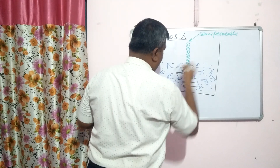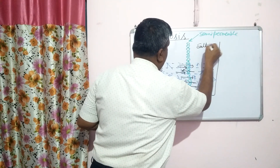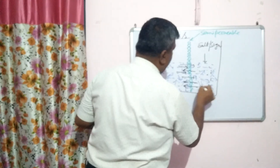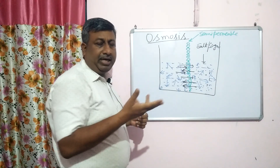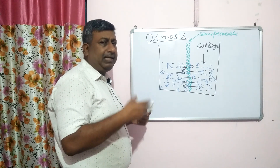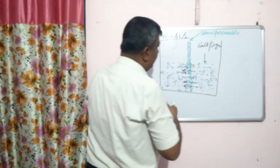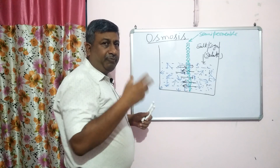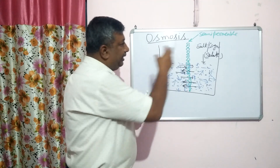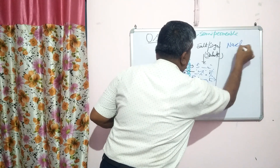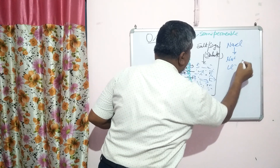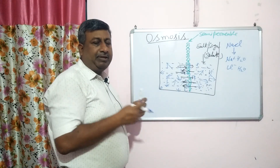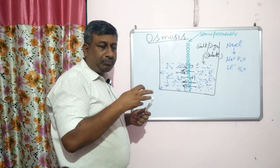But if we add some salt or sugar — for example NaCl or table sugar — to one side, then on that side we have solvent and solute. The solute is dissolved in water. Water has some association or attraction with this molecule. If we add NaCl, it dissociates into Na⁺ and Cl⁻. The water molecule attaches with these ions because water is a dipolar molecule, so it has attraction with both anions and cations. Some water molecules attach with the ions.